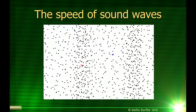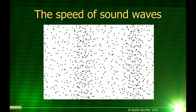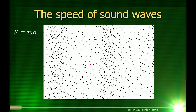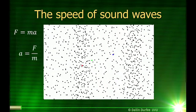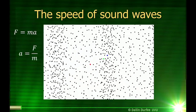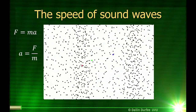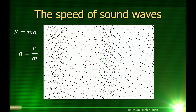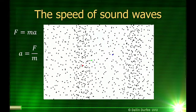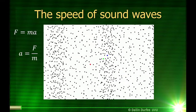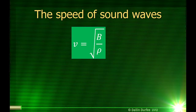What determines how fast our molecules wiggle back and forth as the wave goes through? Newton's second law says force equals mass times acceleration, or acceleration is force divided by mass. So how the molecules move depends on the forces on them because of the different pressures in the wave, but it also depends on the masses of the individual gas particles. If you work through all the physics of how these forces push on little bits of air, you come up with the canonical speed of sound found in most undergraduate physics textbooks.